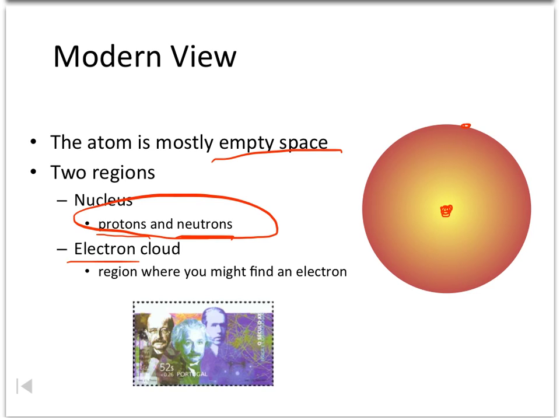It's a region where you can find an electron, and they almost are acting like they're everywhere and nowhere all at once. You can imagine a fan blade spinning around.